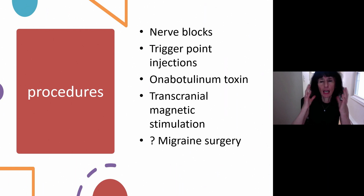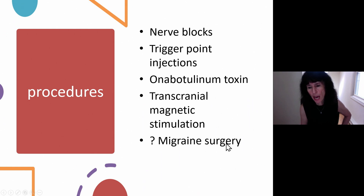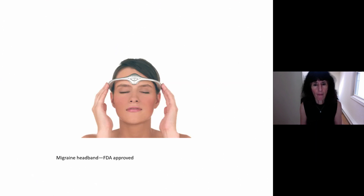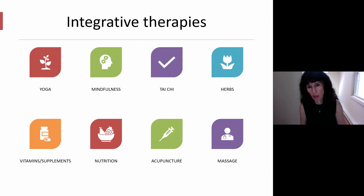Procedures that can help: nerve blocks — basically anesthetizing the area of the head that's in pain — work best for people with frequent headaches. Trigger point injections can help with muscle spasm. Onabotulinum toxin for patients with chronic migraine. Transcranial magnetic stimulation is being looked at but isn't evidenced. Migraine surgery has no good data, and the American Headache Society suggests steering patients away from it until randomized controlled studies are done. The migraine headband got fast-tracked by the FDA: 53% of people had a response to it, but 47% of placebo users had the same response. It's expensive and I don't recommend it.